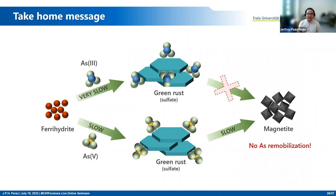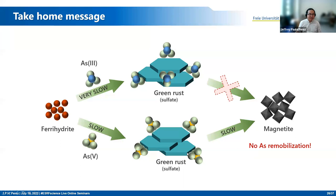So what is the take-home message? For two different arsenic species, arsenic(III) and arsenic(V), there are differences in how each reacts: arsenic(III) makes green rust formation very slow, whereas it is a bit faster with arsenic(V). Because the inhibition efficiency of arsenic(III) is higher, we don't see magnetite formation within 30 days, but for arsenic(V), we do. Most importantly, there is no arsenic remobilization, even though green rust has transformed to magnetite.